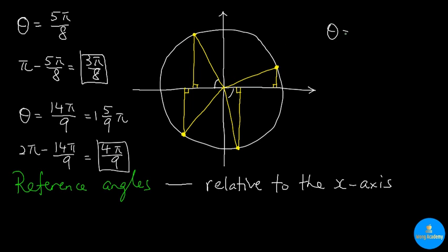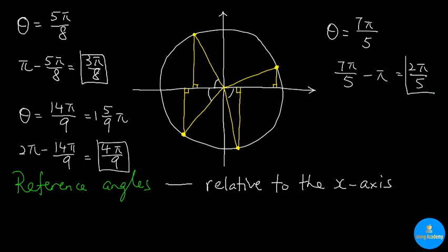If theta equals 7π over 5, notice that this angle is greater than π but less than 3π over 2, so it is in the third quadrant. To find the reference angle, we subtract π from your angle: 7π over 5 minus π equals 2π over 5, and that is the reference angle.